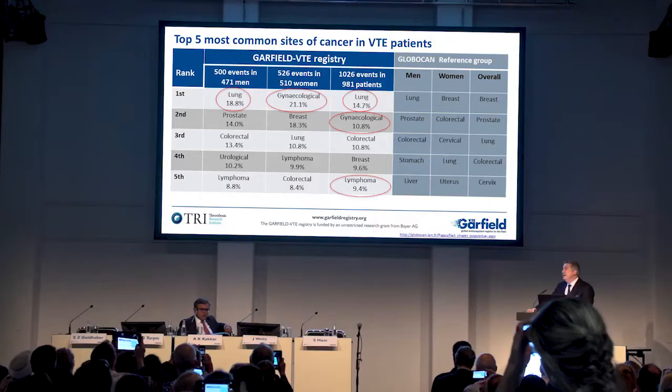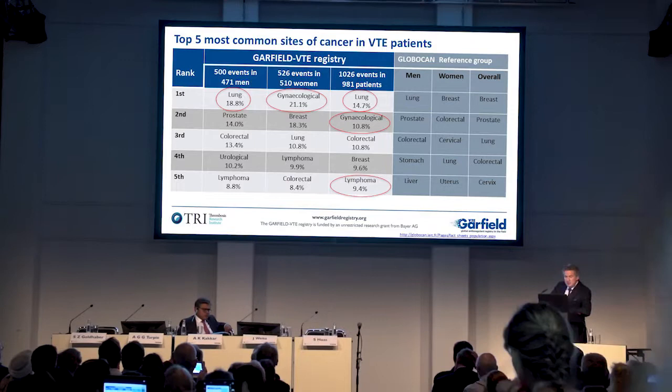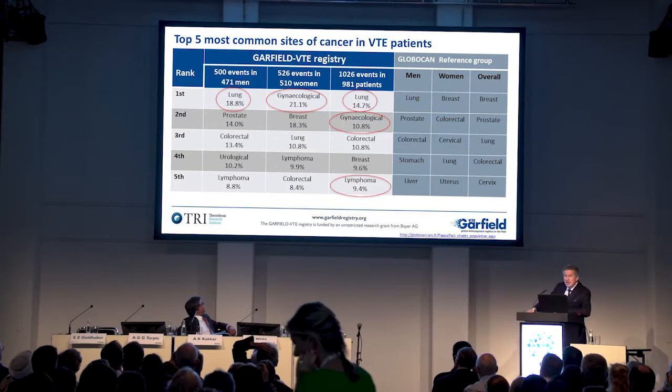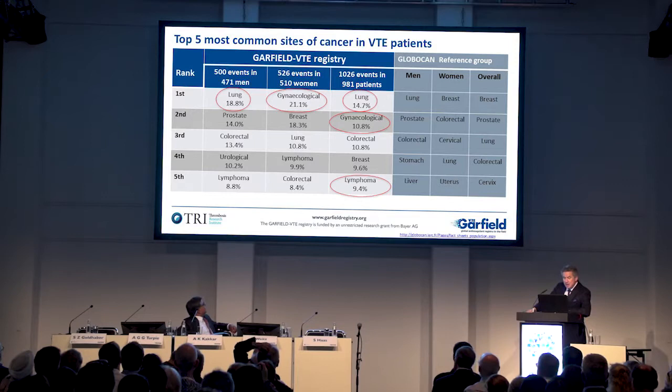What are the five most common sites of cancer in our VTE patients? In men, the top two are lung and prostate. In women, the top two are gynecological and breast. So in the total Garfield VTE cancer population, lung is number one and gynecological is second.